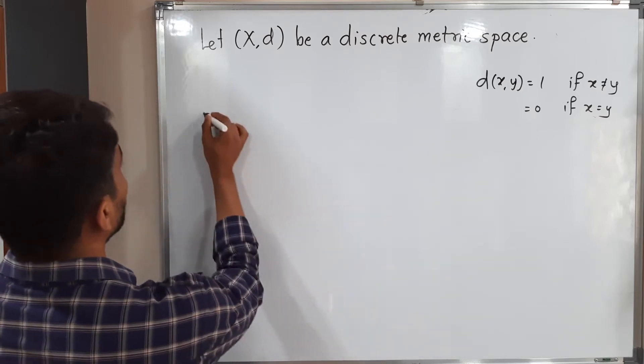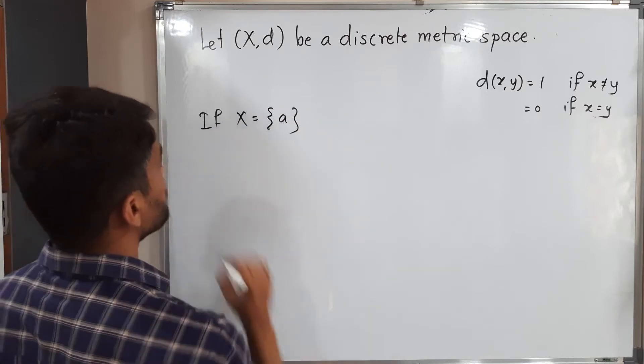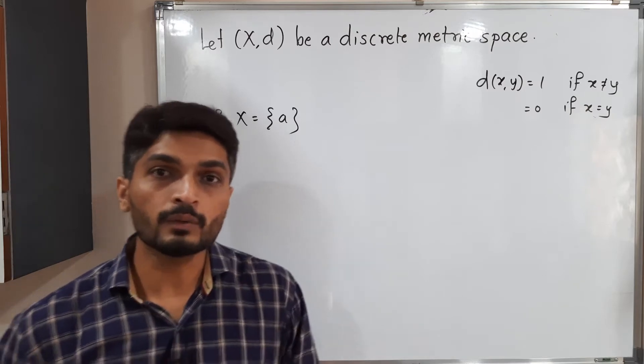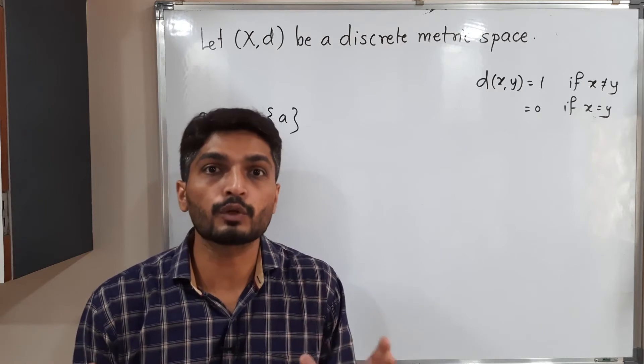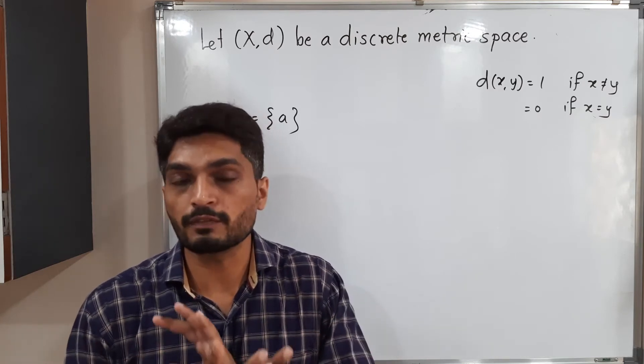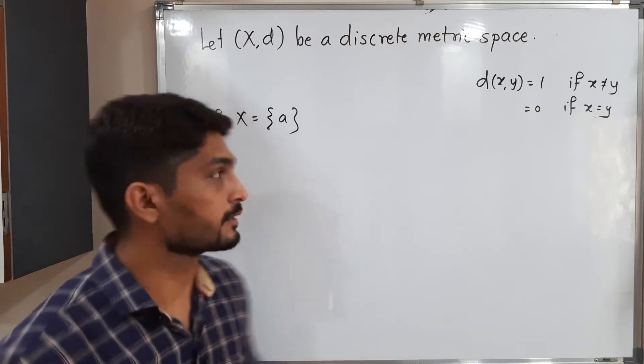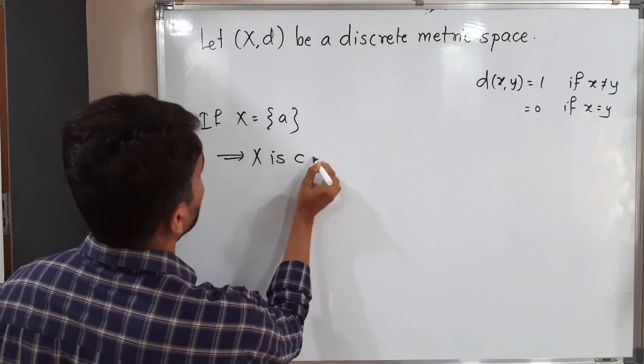We start with if X is a singleton set. Let us see what will happen. We know that every singleton set is connected since we cannot express it as a union of two non-empty sets. That's why it is definitely not disconnected. Therefore, every singleton set is connected. So what is our conclusion? Therefore, X is connected.